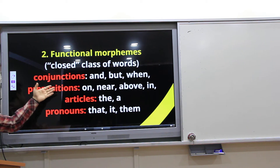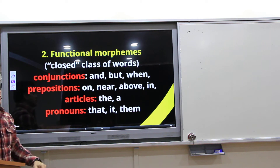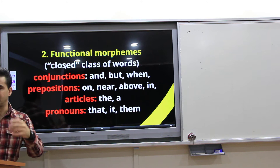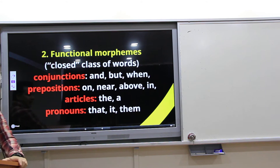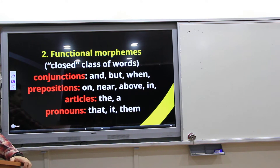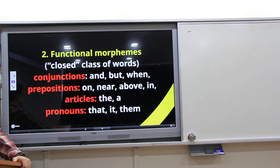Prepositions — like 'on top of' or 'under' — articles, and pronouns. These are all examples of functional morphemes.